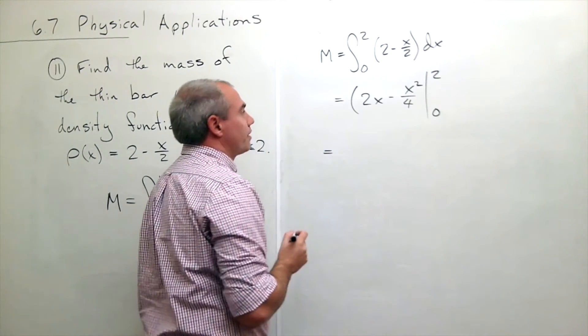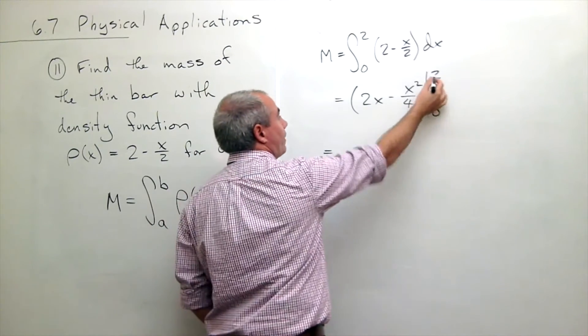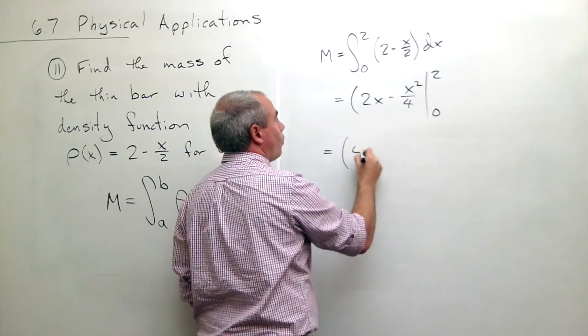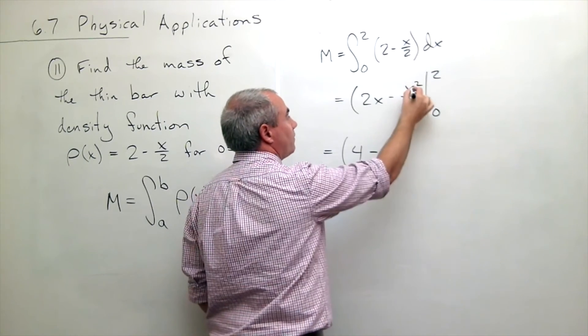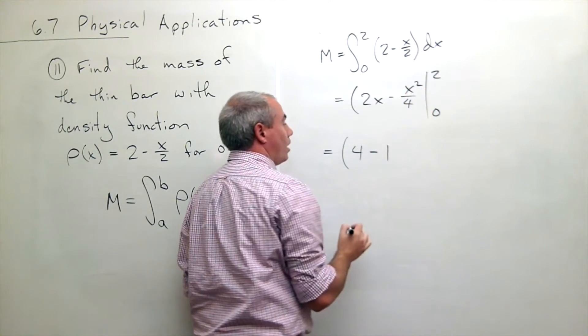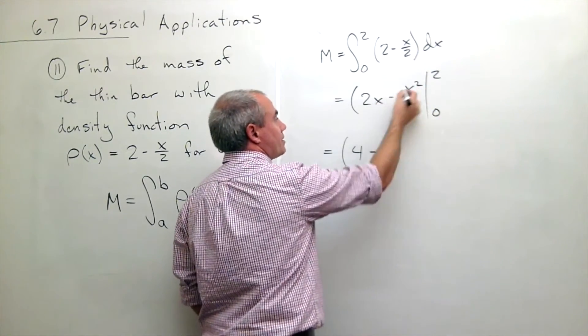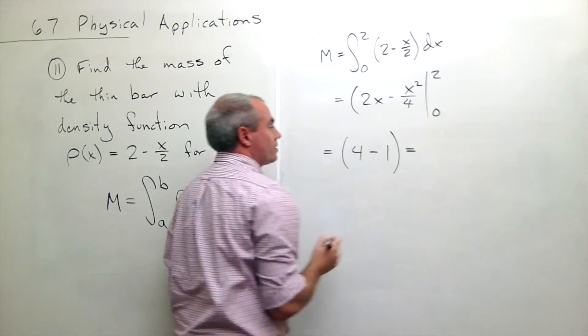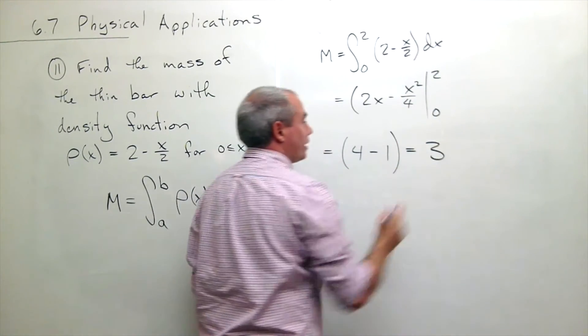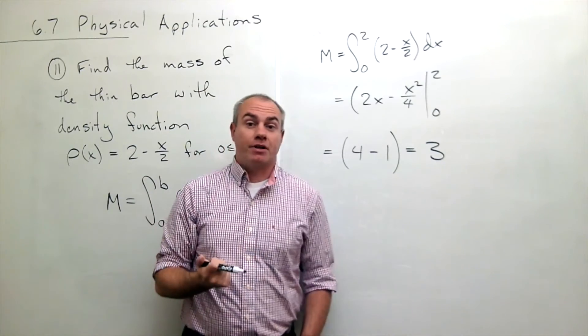Let's plug things in. If I plug in a 2, I get 4 minus 4 over 4, which is 1. And if I plug in 0, I get 0 minus 0, so it's just 4 minus 1, which is 3.